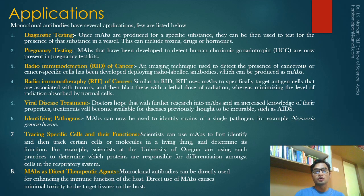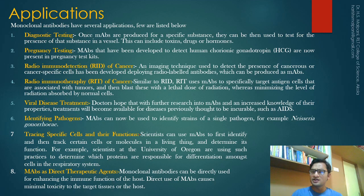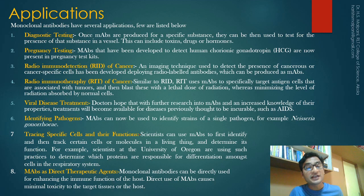The last topic is the application of monoclonal antibodies, which have wide uses. First, they are used in diagnostic testing — once produced for a specific substance, they can detect the presence of that substance, including toxins, drugs, hormones, and even snake venom. Second, they have application in pregnancy testing. Third, they are used in radioimmunodetection for cancer — an imaging technique using radiolabeled antibodies to detect cancerous or cancer-specific cells.